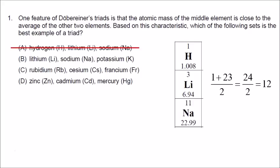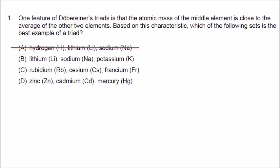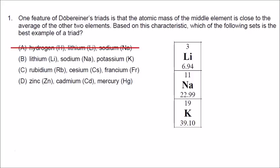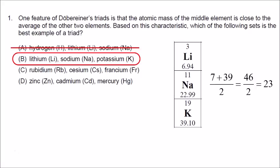Looking at lithium, sodium, and potassium: the average of 7 and 39 works out to be 23, which is very close to the atomic mass of sodium. So that's the correct answer.